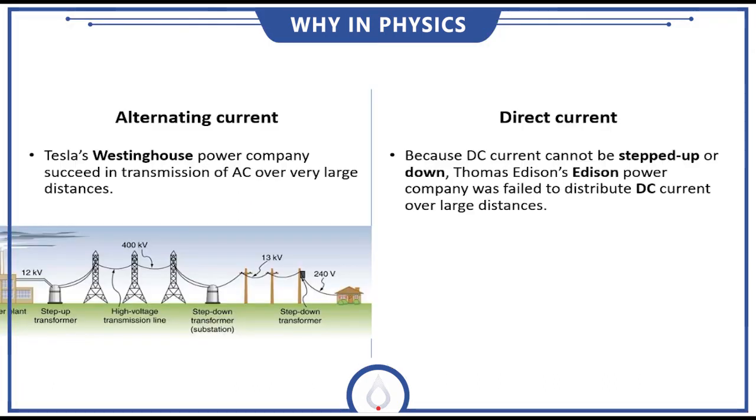So let's move on to the distribution system of AC as compared to DC. In alternating current, the Westinghouse Power Company Tesla's was based on the alternating current and they distributed alternating current at very large distances using the transformer. So the AC current was stepped up to thousands of voltages keeping the current minimum in the wires. That's why there was least loss of electric power during the distribution.